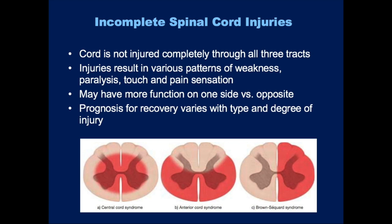Brown-Séquard syndrome is injury to a hemisection — half of the spinal cord. These patients have motor and sensory loss below the site of the injury, but the presentation is on the opposite side of the injury. On one side, you lose motor and light touch, and on the other side, you lose pain sensation. This is because the pain tracks cross over after entering the spinal cord and carry the impulse on the opposite side of the cord. These can be very complicated presentations, but there are general patterns you can learn to recognize.